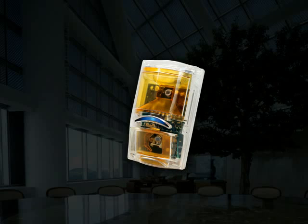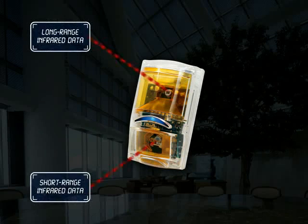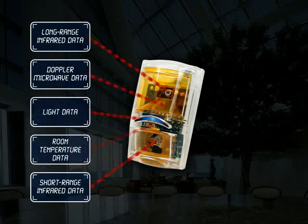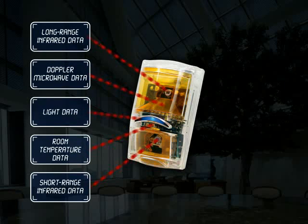While other motion detectors simply react to input from one or two sensors, Bosch Professional Series detectors actually integrate and process data from up to five different sensors to make the world's most intelligent alarm decisions.